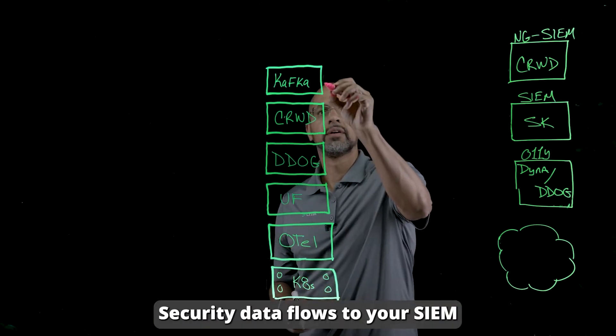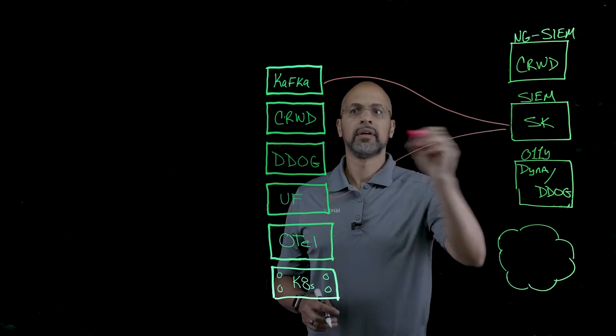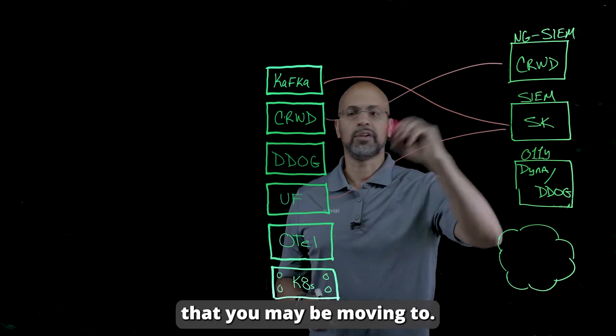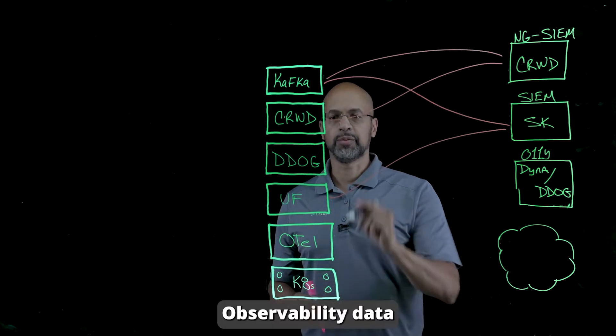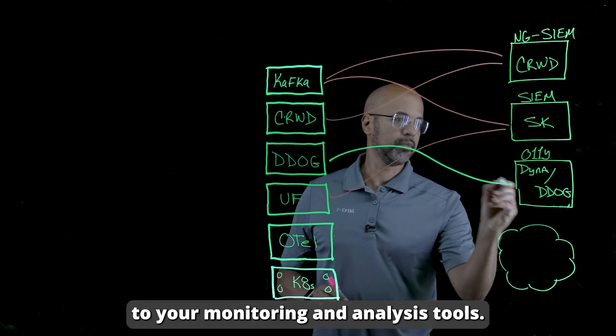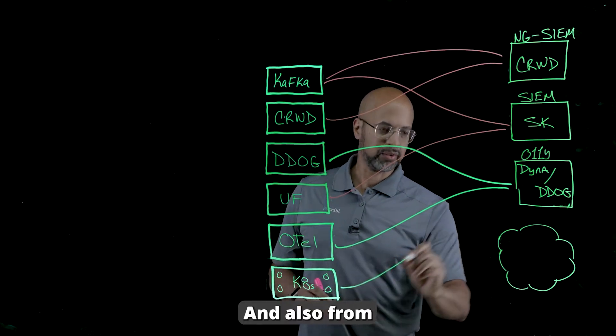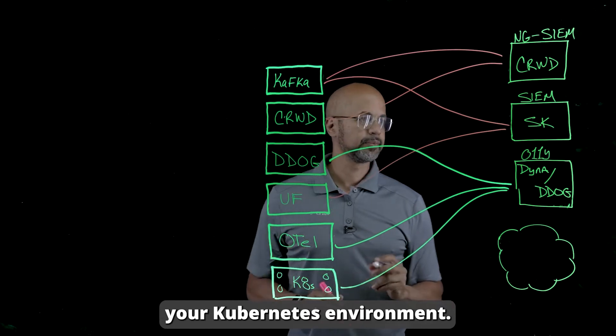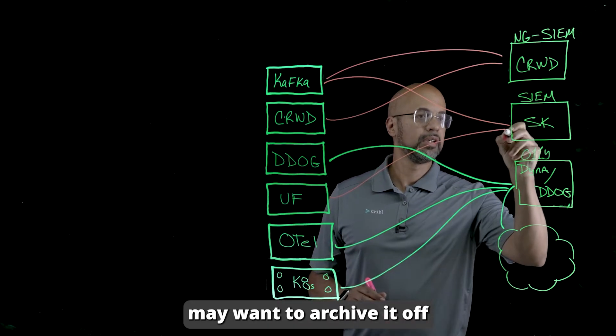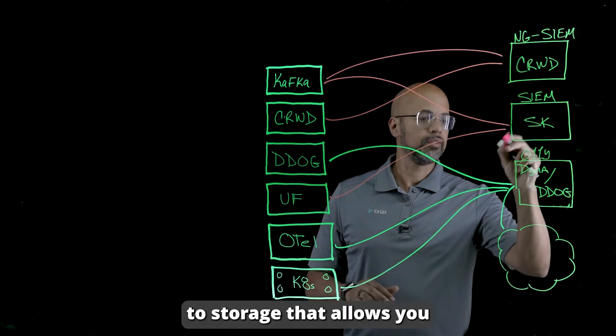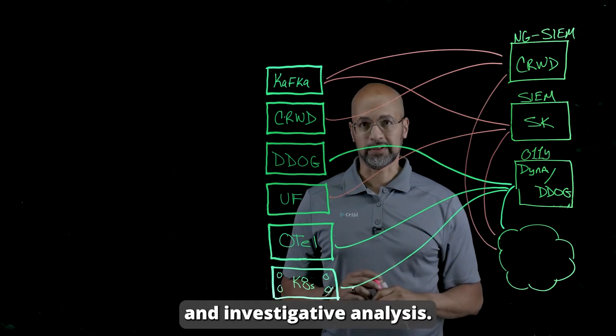Security data flows to your SIEM and potentially a next-gen SIEM that you may be moving to. Observability data will flow to your monitoring and analysis tools and also from your Kubernetes environment. Now these tools may want to archive it off to storage that allows you to do further compliance and investigative analysis.